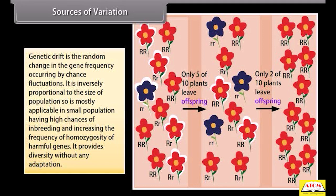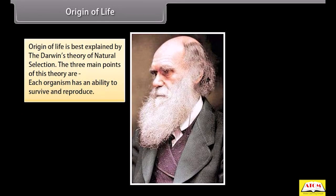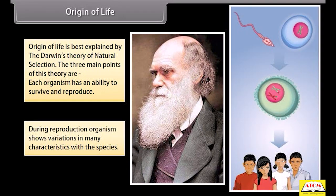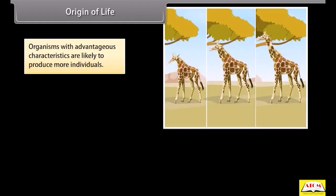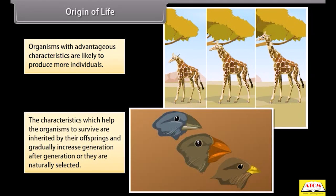Genetic drift provides diversity without any adaptation. The origin of life is best explained by Darwin's theory of natural selection. The three main points of this theory are: each organism has an ability to survive and reproduce; during reproduction, organisms show variations in many characteristics within the species; and organisms with advantageous characteristics are likely to produce more individuals. The characteristics which help organisms to survive are inherited by their offspring and gradually increase generation after generation — they are naturally selected.